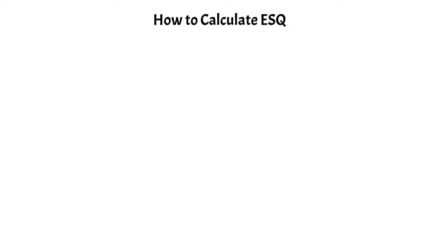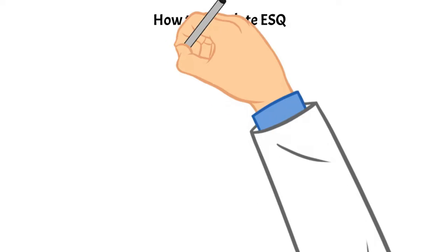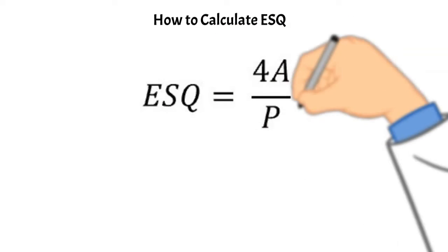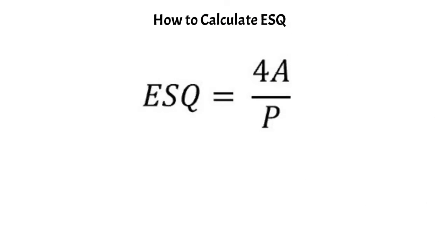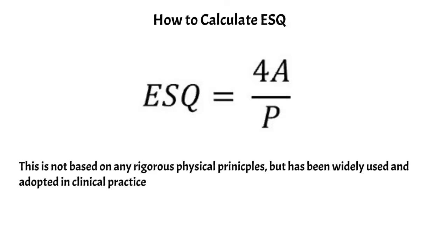We can actually calculate the equivalent square by using the following equation. The equivalent square is just going to be equal to the ratio of four times the area to the perimeter. In the top here, A is your area of your field, and P is the perimeter of your field.